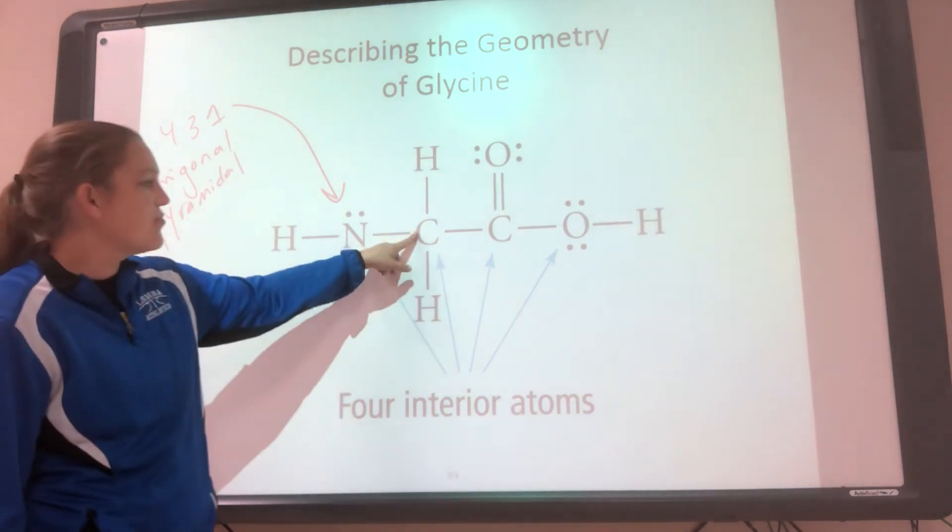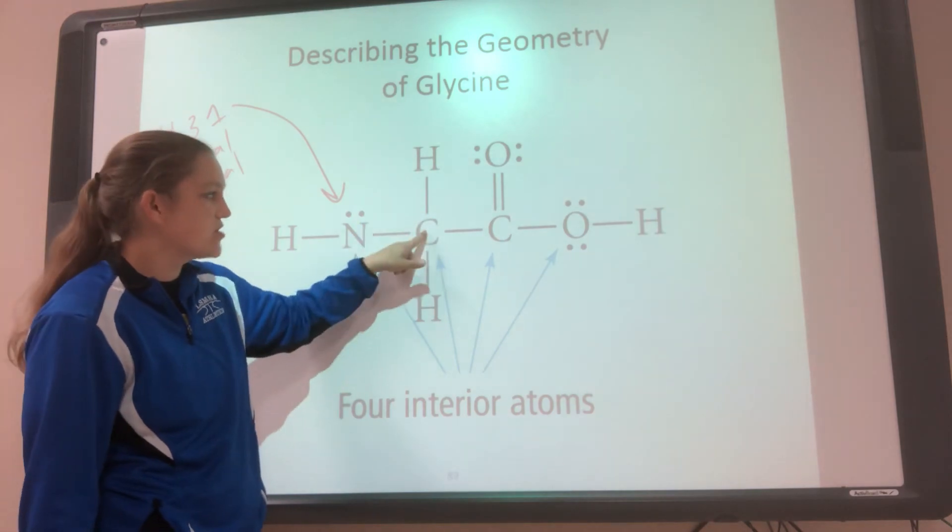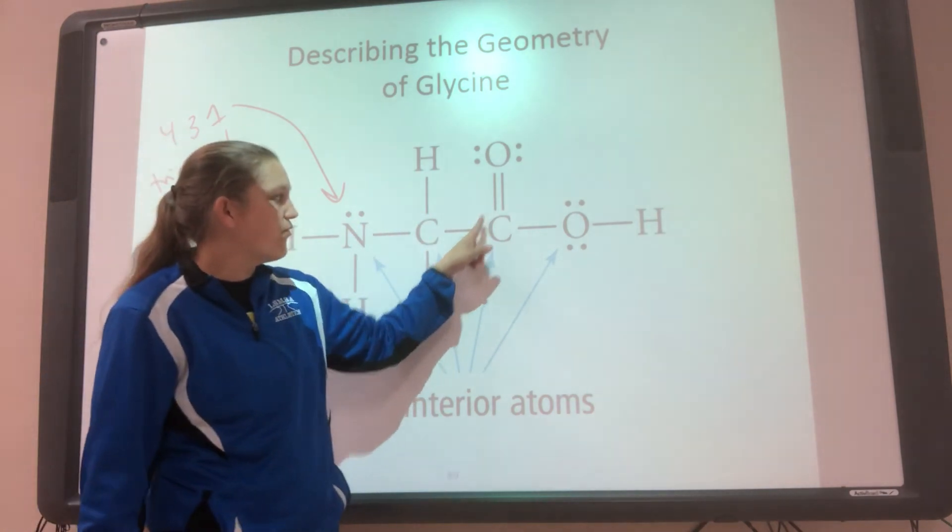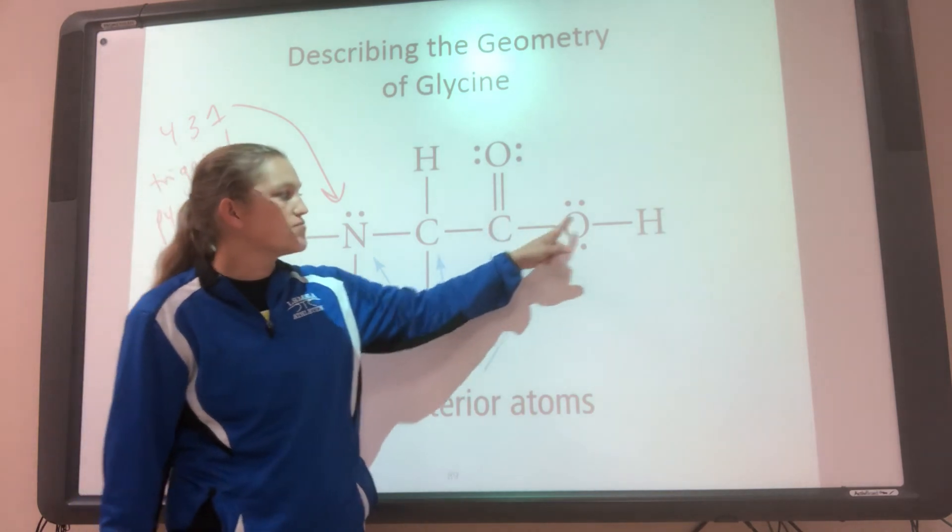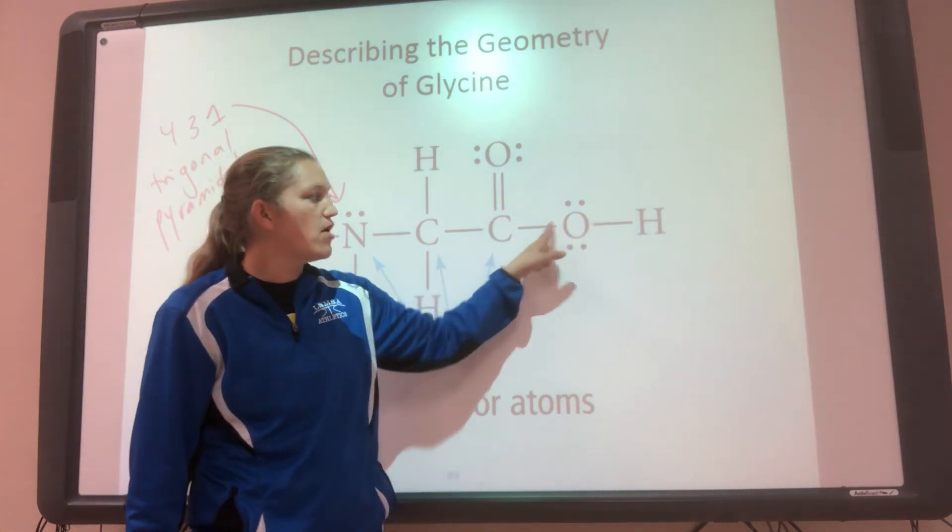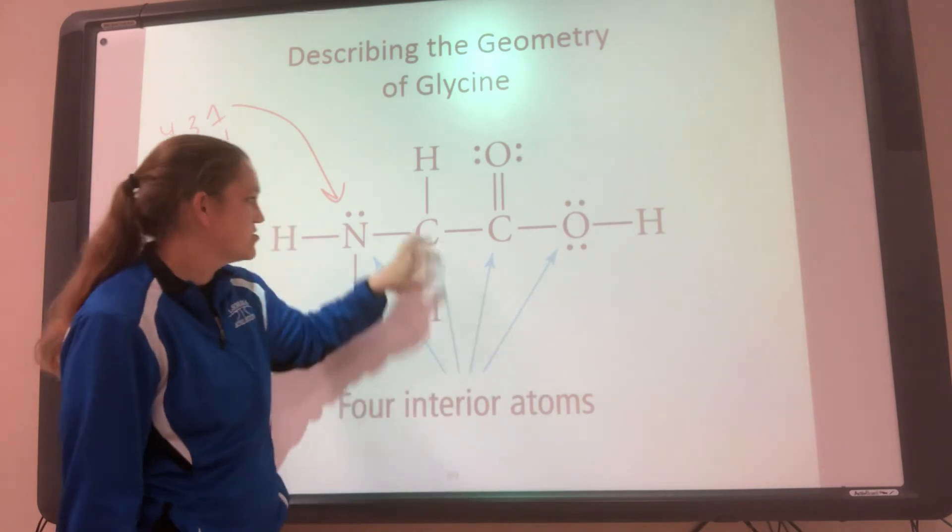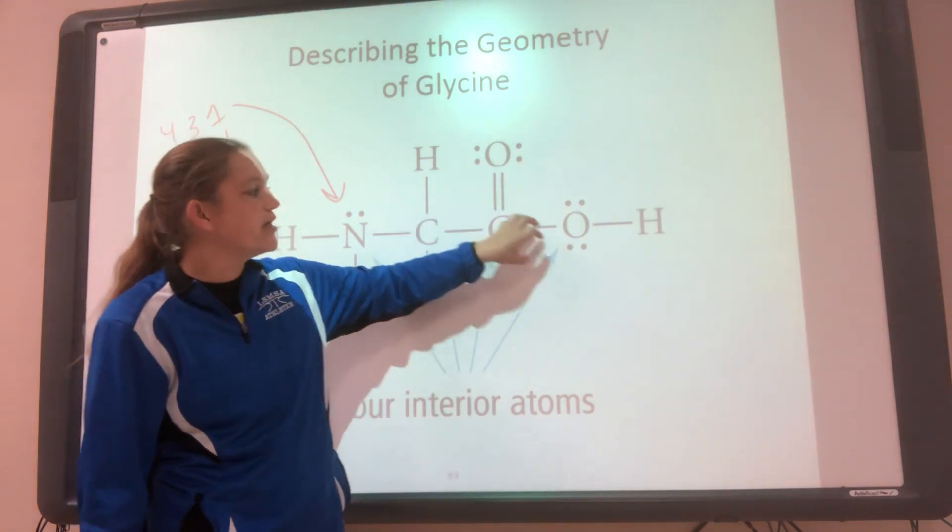So this is the same one we've already done, four, four, zero, tetrahedral. This one we did before with the three, three, zero, trigonal planar. This one's your four, but with two bonds, two lone pairs, the bent. So tetrahedral, trigonal planar, bent.